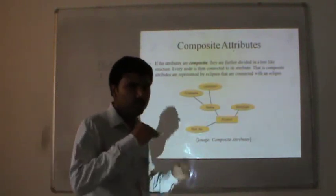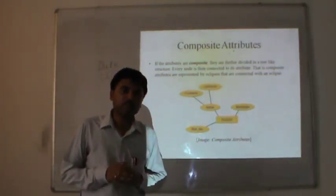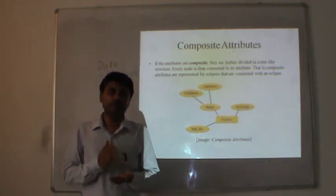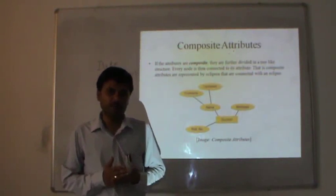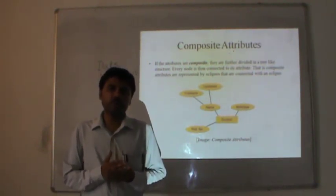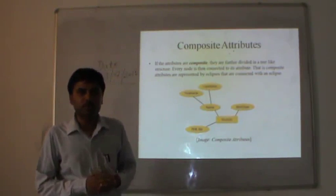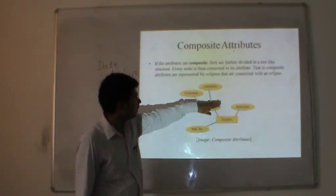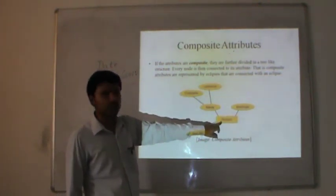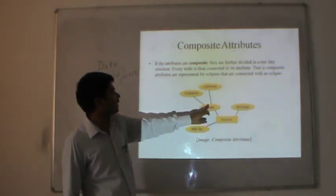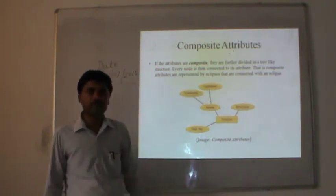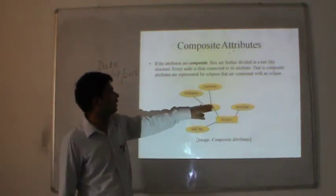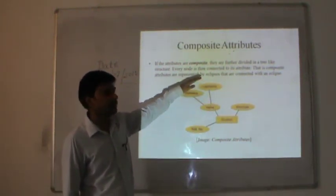Composite attributes: we have discussed composed attributes, where an attribute is constituted with the help of more than one attribute — like your name having first name, middle name, and last name. These are a combination of one or more simpler or composite attributes. This is represented with the help of nested attributes — name is an attribute of student, and it is again characterized with first name and last name. This is the component structure — attribute has again some sub-attributes.